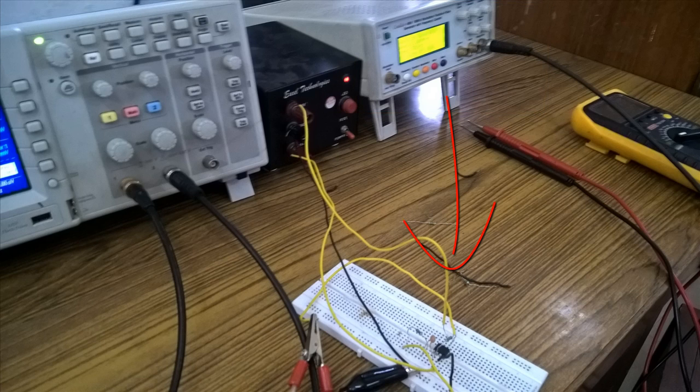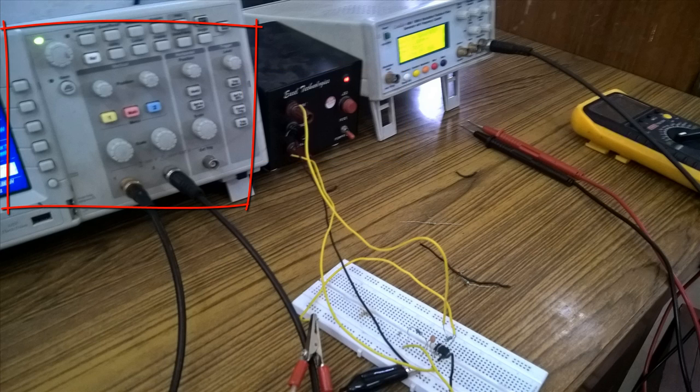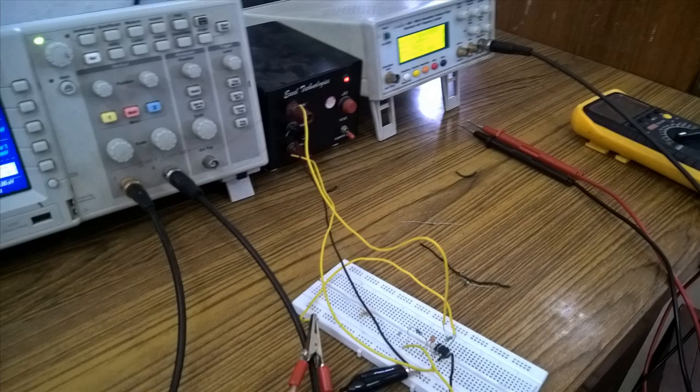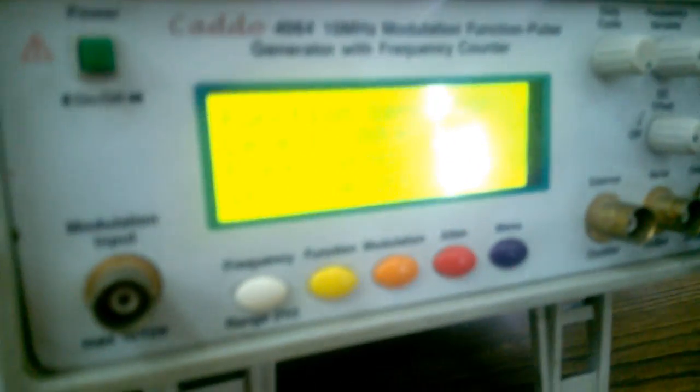This is my setup for this experiment. This right here is my function generator which will be providing a sinusoidal signal, and that would be going into the input of this filter circuit. Then this is the power supply for the 741C IC, and then this is the DSO on which I will be observing both the input signals as well as the output signal from the active high pass filter circuit.